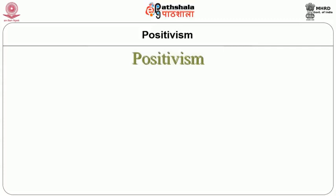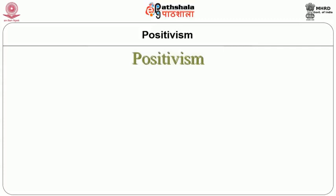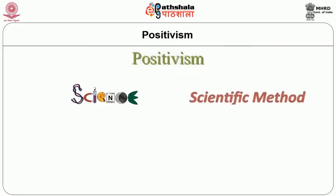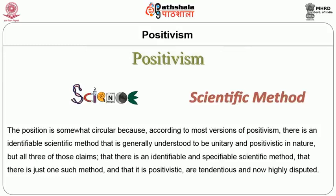Positivism is a family of philosophical views characterized by a highly favorable account of science and what is considered as being the scientific method. As such, the position is somewhat circular because according to most versions of Positivism, there is an identifiable scientific method that is generally understood to be unitary and positivistic in nature. But all three of these claims — that there is an identifiable and specifiable scientific method, that there is just one such method, and that it is positivistic — are tendentious and now highly disputed.